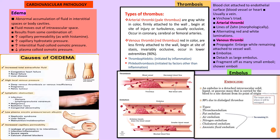Now we look at cardiovascular pathology. Edema is an important topic — it is the abnormal accumulation of fluid in the interstitial spaces or body cavities. Edema can be due to increased capillary permeability, increased capillary hydrostatic pressure, increased interstitial fluid osmotic pressure, or decreased plasma colloid osmotic pressure. Conditions associated with edema include congestive heart failure, nephrotic syndrome, cirrhosis, and elephantiasis. Regarding thrombosis: venous thrombi are more common; arterial thrombi show lines of Zahn. An embolus is a detached blood clot while a thrombus is an attached blood clot — emboli are more dangerous as they can travel and block any blood vessel.